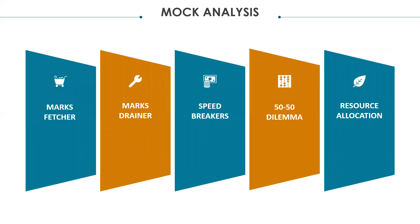What are the things that you should analyze in mocks? Look out for the marks fetchers — these are those questions in which you are confident that you can score well, irrespective of the level of difficulty of the paper. Make a note of these questions and solve them in the paper with 100% accuracy. Look out for the marks drainers — these are questions in which you have made mistakes in mocks. Make your brain aware of these questions, and either be very alert while solving them or skip them for later. The third type is the speed breakers — these are questions you know you can do correctly but take more time, so make a note of them. Such segregation will help you navigate through the paper with much more ease.